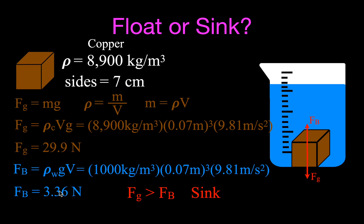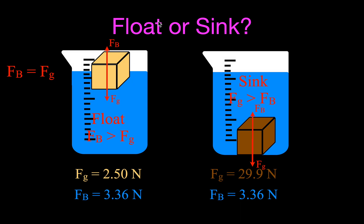That is how you use buoyancy to determine whether things sink or float. To summarize: the oak floats because the buoyant force (3.36 N) is greater than its weight (2.5 N). When floating, only part of the cube displaces water, so the buoyant force equals the weight and the cube is in equilibrium. The copper sinks because its weight (about 30 N) is greater than the buoyant force (3.36 N). Both cubes had the same buoyant force because they have the same volume in the same liquid — it's the greater density of copper that gives it the greater weight.